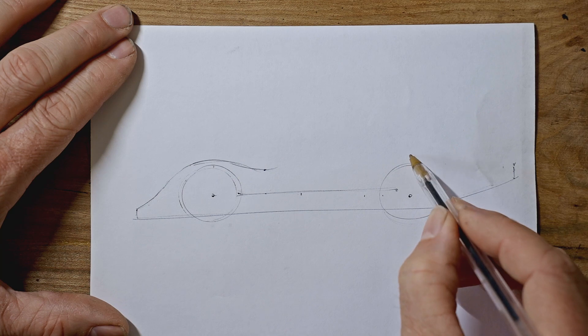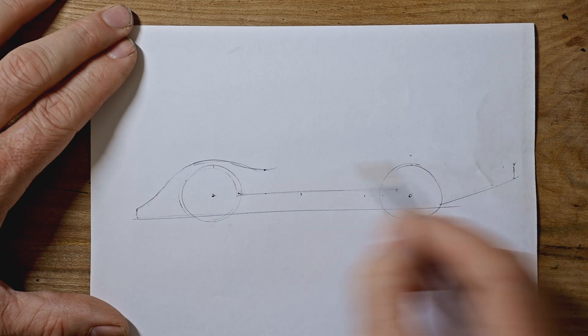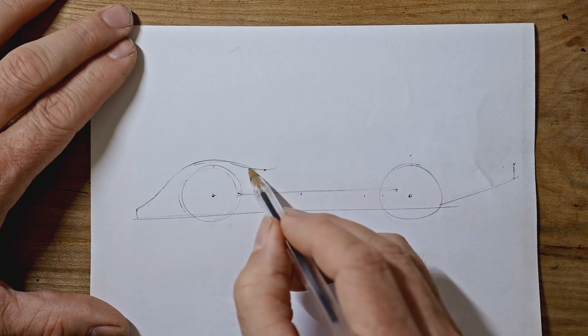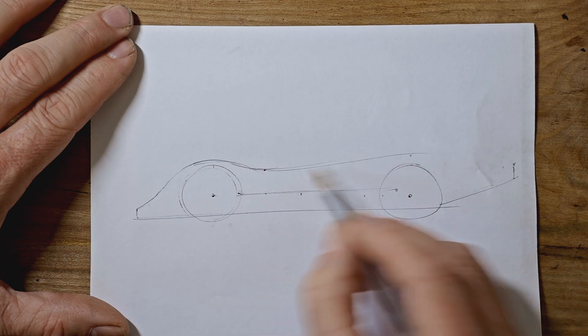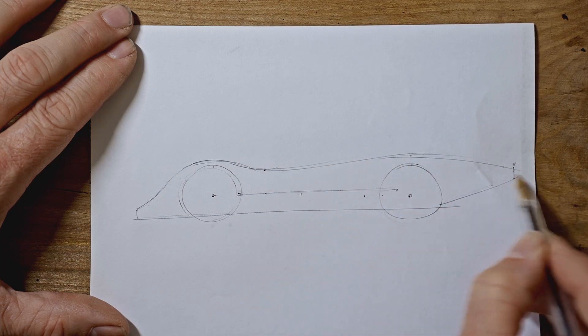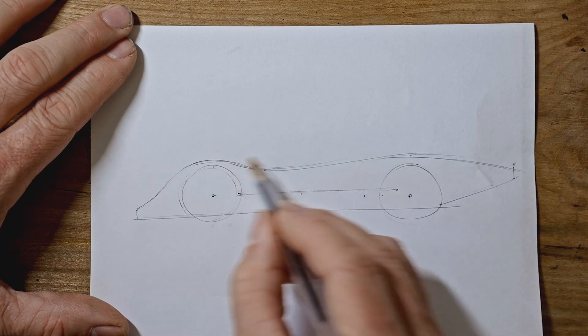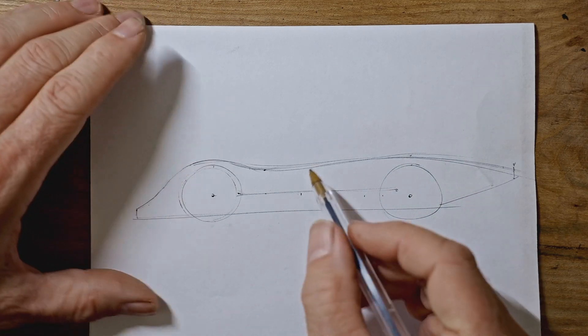The next bit gets a bit easier. So over the back wheel, a little bit higher. That's going to be the high point there. So over that and then drop down into the tail. You want a nice swoopy, streamlined shape. Like that. That's the tricky bit out of the way.